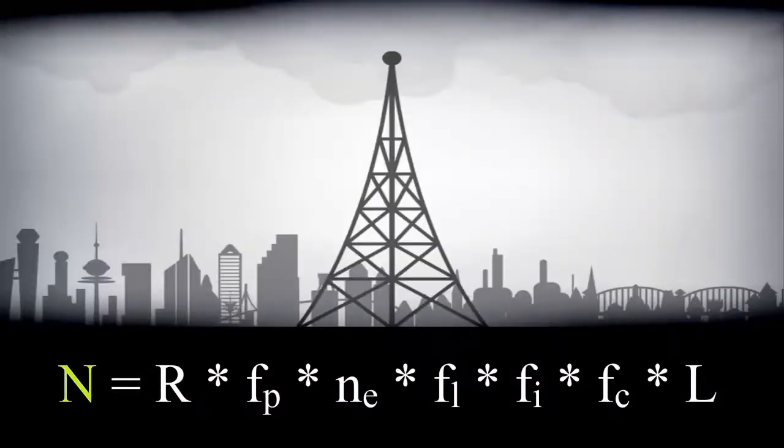N is what we're trying to solve for with this equation. It's the number of broadcasting civilizations, meaning civilizations like ours that are broadcasting signals from our own Milky Way galaxy into space, and might be able to communicate with us at this moment in time.